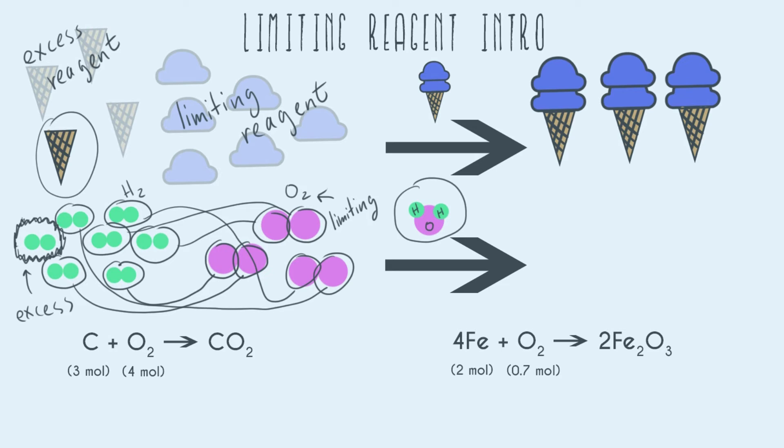All right, so now let's go ahead and do a couple examples that are probably closer to what you're going to see in class. We're leaving the analogy, doing more practice problems. So in this first example, C plus O2 becomes carbon dioxide.